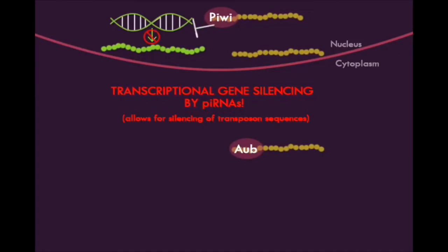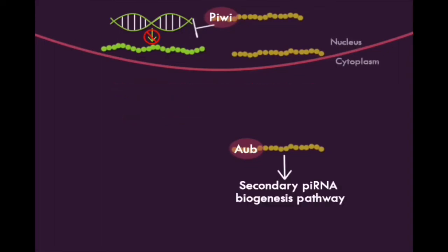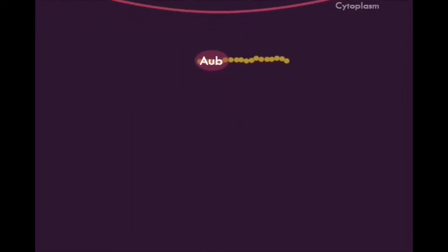Aubergine and PIWI-associated PI-RNAs in the cytoplasm can also be involved in the ping-pong pathway, also known as the secondary biogenesis pathway.